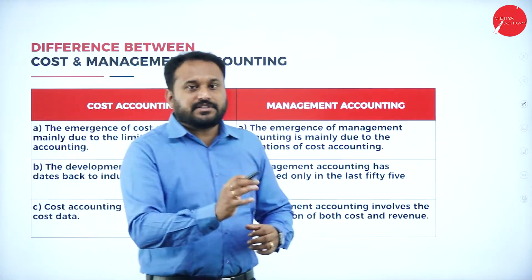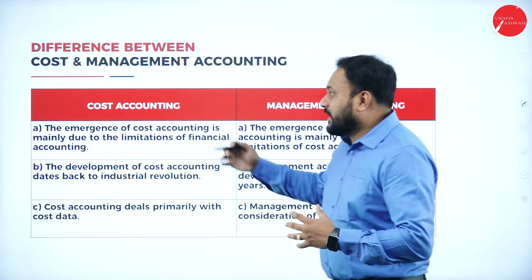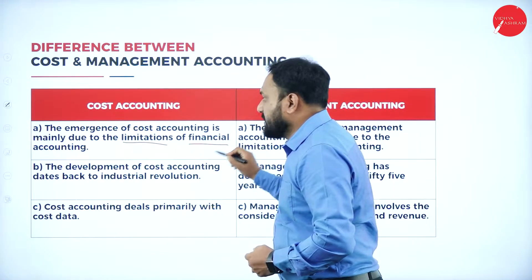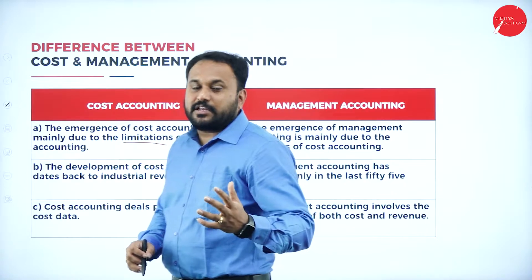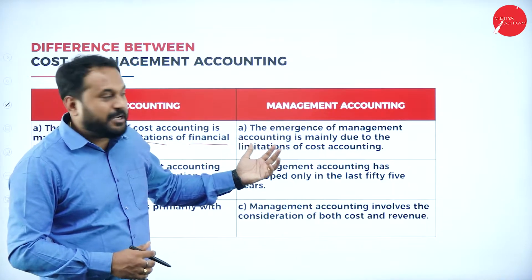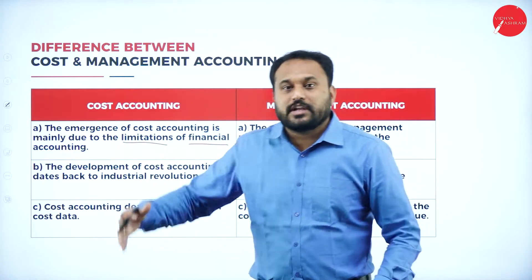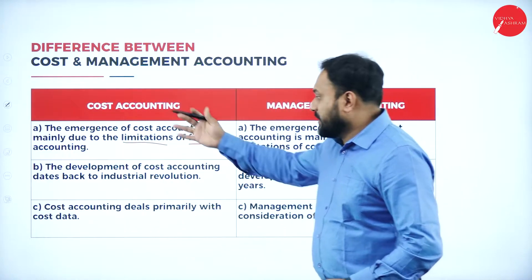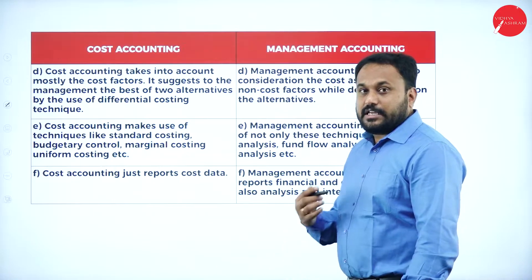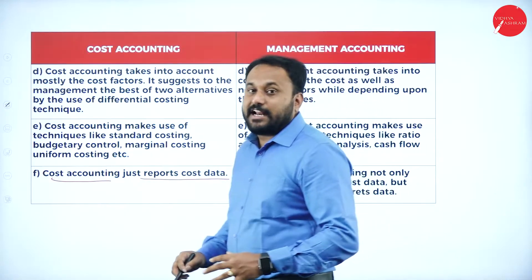I have taken cost accounting and management accounting side by side. For cost accounting, the emergence is mainly due to the limitations of financial accounting. For management accounting, the emergence is because of the limitations of cost accounting. I have given you three sets of differences — three plus three plus four — totaling 10 differences. Cost accounting just reports cost data, but management accounting does something more.